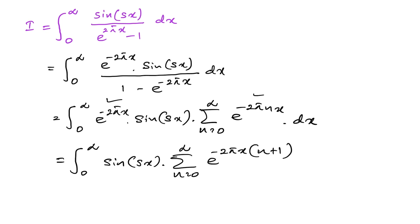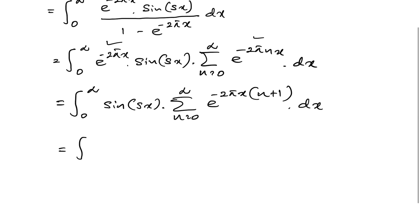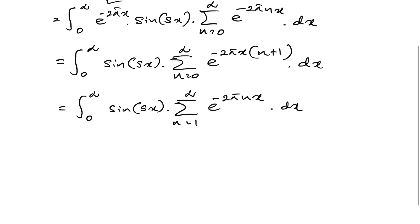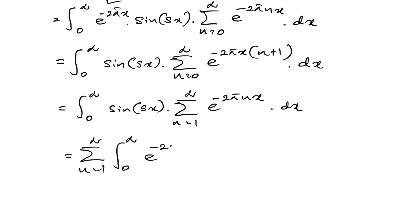We can take e^(−2πx) as a common factor giving e^(−2π(n+1)x). As the next step, I shift the index so that the sum runs from n=1 to infinity of e^(−2πnx). Then we can switch the integral and the sigma notation, giving the sum from n=1 to infinity of the integral from 0 to infinity of e^(−2πnx) times sine(sx) dx.